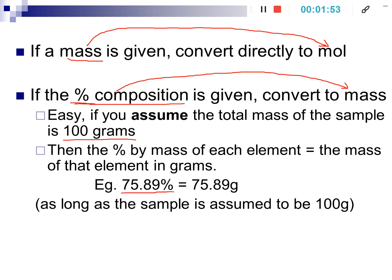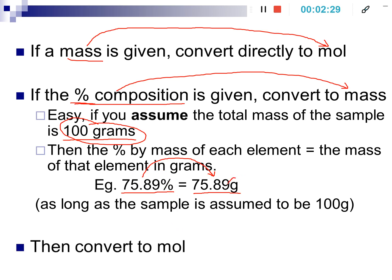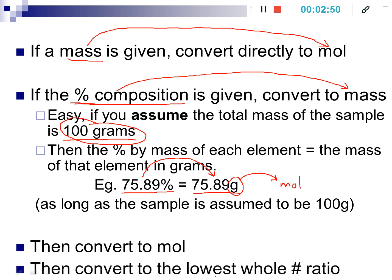For example, if you knew the percent composition of one of the elements was 75.89%, you could assume you're dealing with 100 grams. That would mean in that 100-gram sample, you'd have exactly 75.89 grams of that element. So assume 100 grams of the sample, then the percentage easily gets converted into mass. Once we have mass, we can convert to moles using the molar mass of those elements, and then express that as a lowest whole number ratio — the empirical formula.